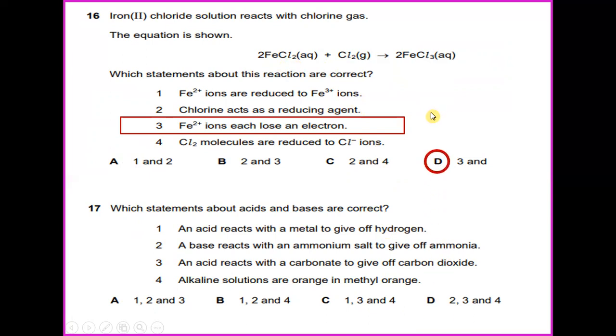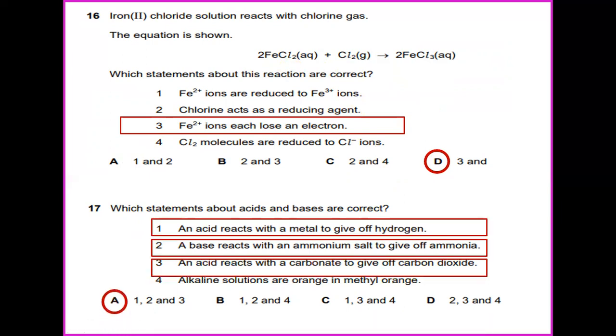Which statements about acids and bases are correct? An acid reacts with a metal to give off hydrogen. Correct. A base reacts with an ammonium salt to give off ammonia. Also correct. An acid reacts with carbonate to give off carbon dioxide. So the answer will be 1, 2, and 3.